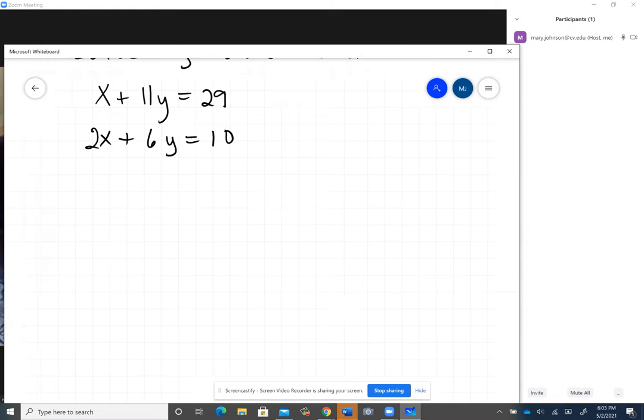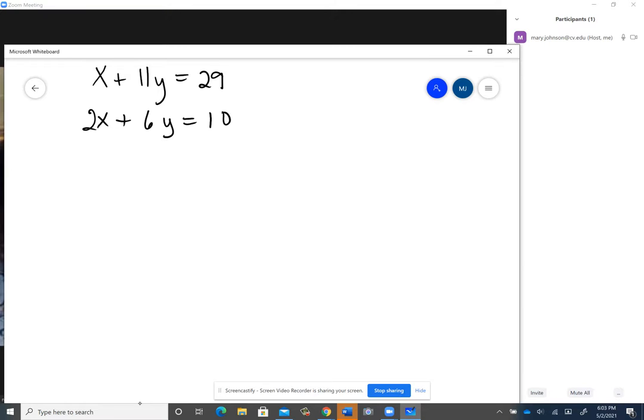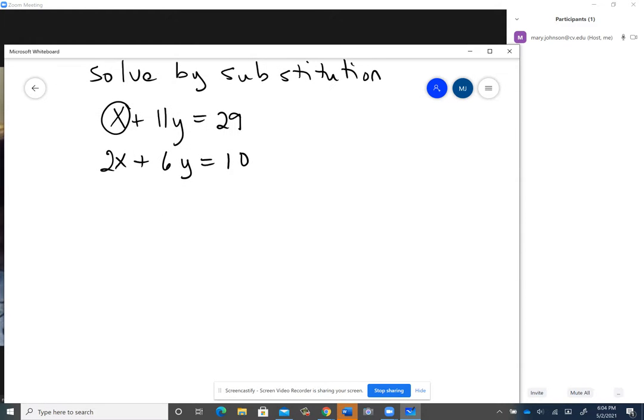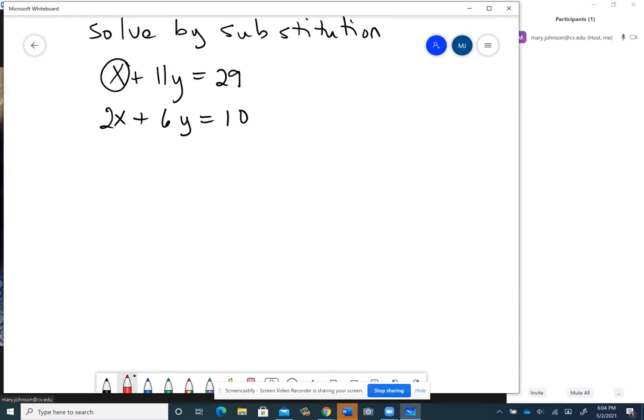so first thing I'm going to do is work on getting one of the variables by itself. And since that x right there, let me see if I can find my tools, there they are. Since that x right there has a coefficient of 1, that would be the easiest variable to get by itself.